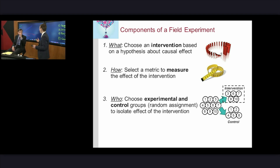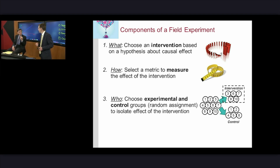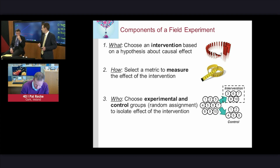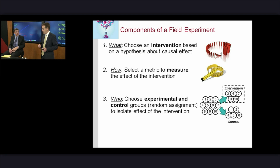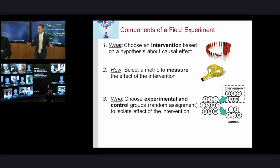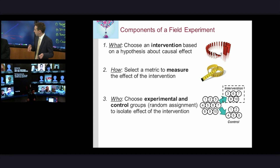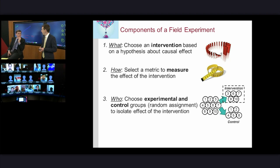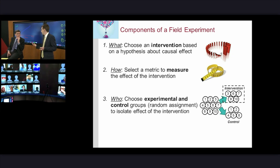It is net promoter score — on a scale of one to ten, would I recommend this to my friends. Then you want to choose an experimental and a control group. Ideally it's random assignment. If you had a hundred people, you'd pick half randomly to be the control and half to be the experiment, and actually conduct an experiment the way a scientist would, using the scientific method.